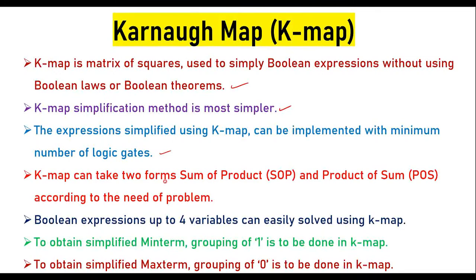KMAP can take two forms — sum of products and product of sums — according to the need of the problem. Boolean expressions up to four variables can easily be solved using KMAP. To obtain simplified minterms, grouping of ones is to be done in KMAP. Similarly, to obtain simplified maxterms, grouping of zeros is to be done in KMAP.